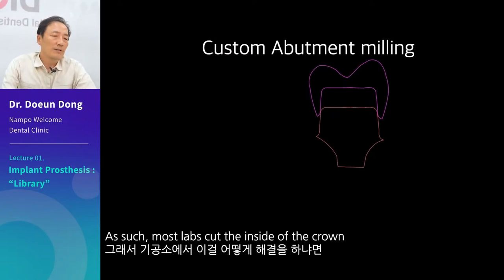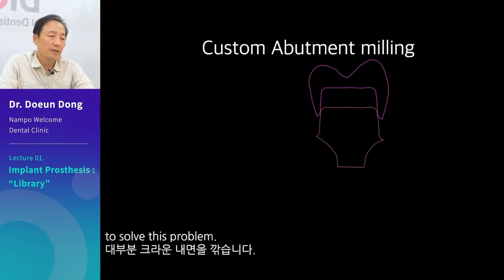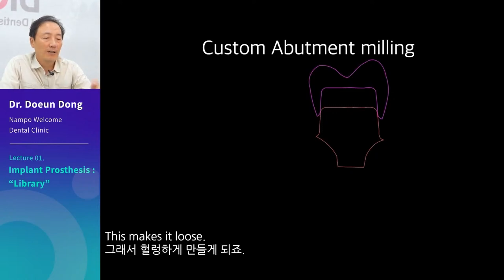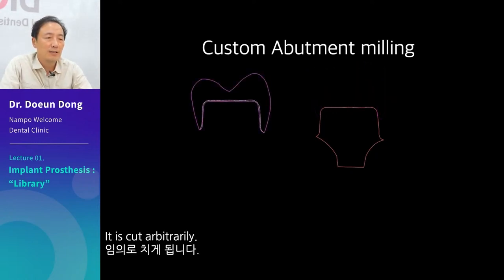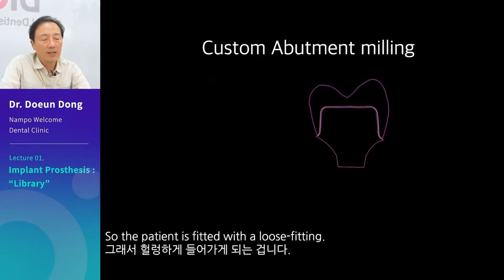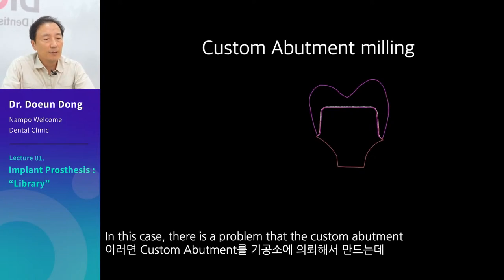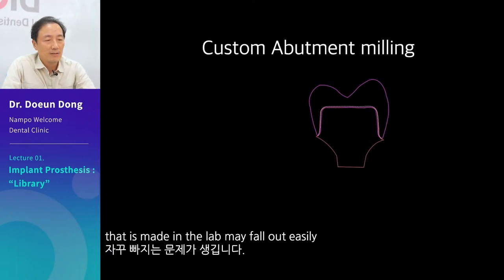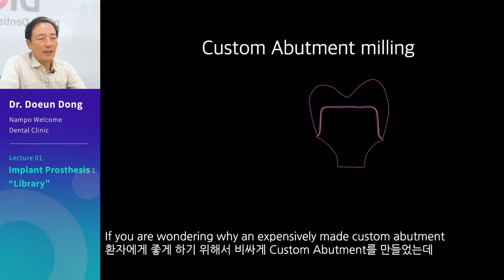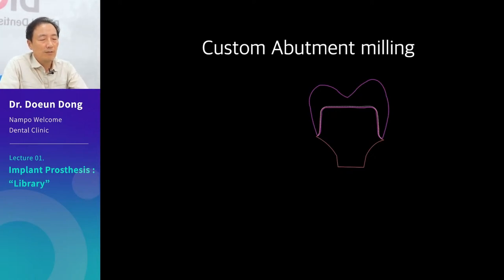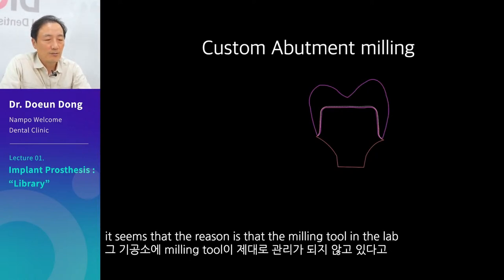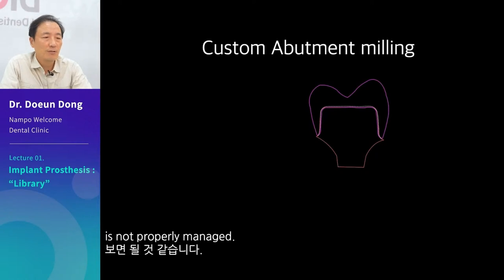Most labs cut the inside of the crown to solve this problem, which makes it loose — it is cut arbitrarily. So the patient is fitted with a loose fitting. There is a problem that the custom abutment made in the lab may fall out easily. If you are wondering why an expensively made custom abutment keeps falling out, the reason is that the milling tool in the lab is not properly managed.